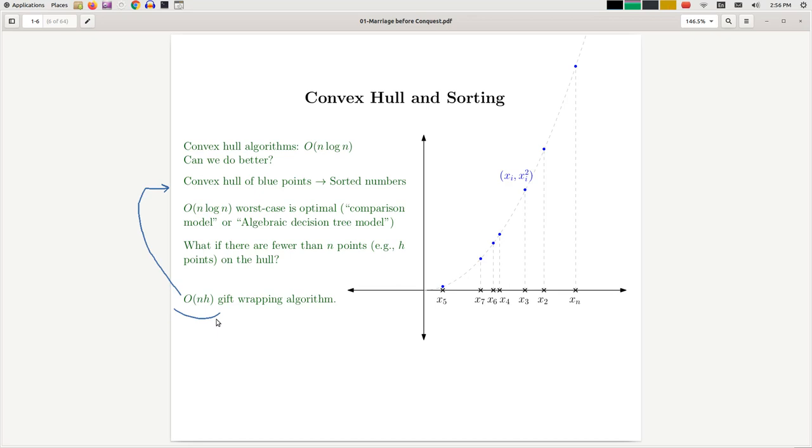Because of this observation a lot of people in the earlier days of computational geometry started to look at output sensitive algorithms. Output sensitive means an algorithm whose running time gets smaller the smaller the output is. In this case the output is the convex hull and if the convex hull is constant size then the gift wrapping algorithm will run in linear time. So therefore gift wrapping is an output sensitive algorithm.